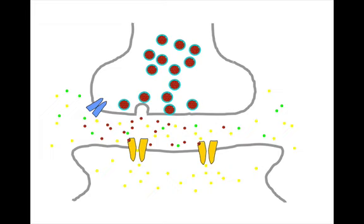And of course, there'll then be a flow of sodium ions into the target neuron, and that will make the membrane potential a bit less negative.